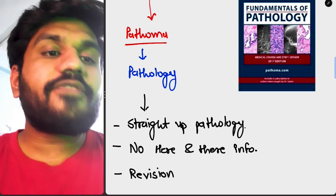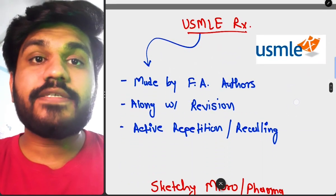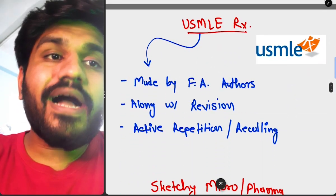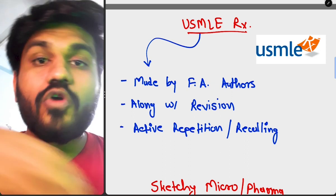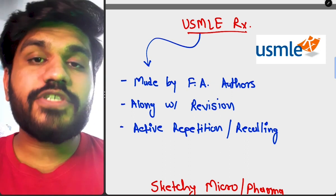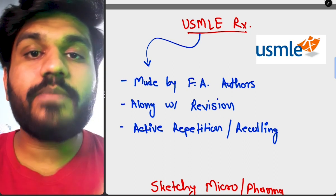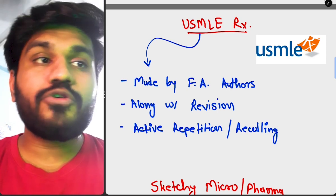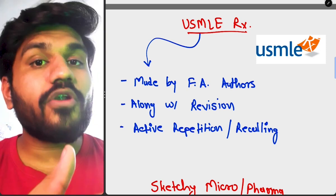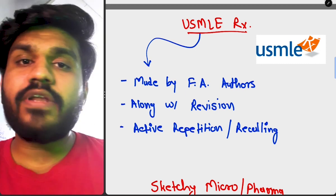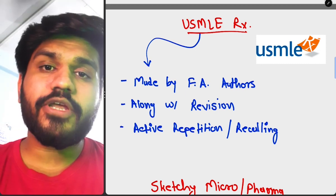After that, we move on to USMLE Rx. USMLE Rx is made by the First Aid authors. After you complete your First Aid and B&B, during your revision you should do USMLE Rx to check your knowledge — to see where you are standing — and it will also help you with active repetition and recall.